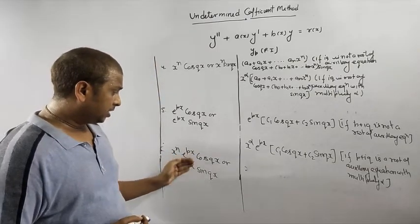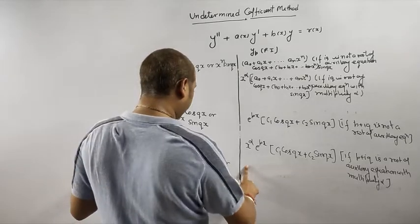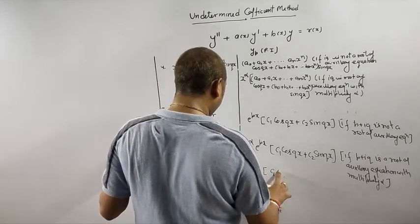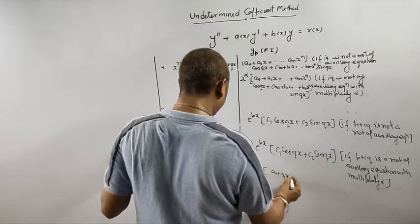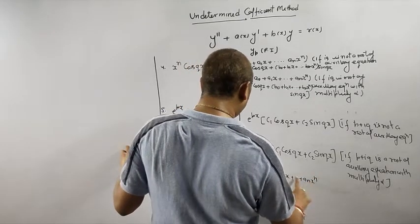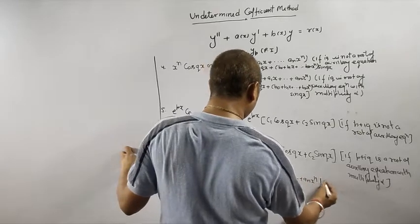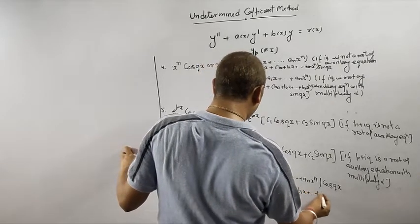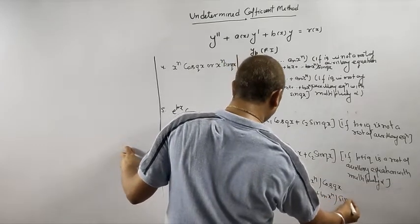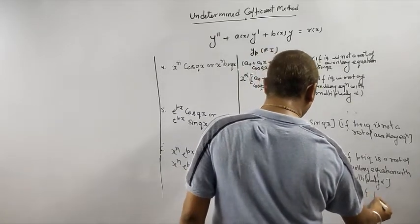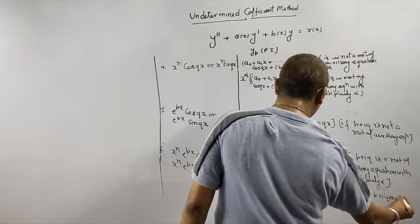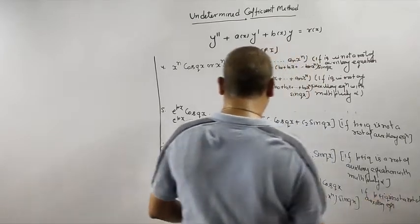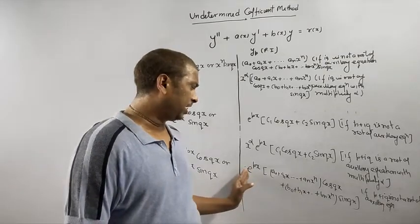The last case: what happens when three functions appear as a product? If rx is e to the power px times x to the power n times cos(qx) or sin(qx), then yp is e to the power px times (a0 plus a1x plus ... plus an x to the power n) times cos(qx) plus a similar polynomial times sin(qx). If p plus iq is a root with multiplicity alpha, then multiply by x to the power alpha.